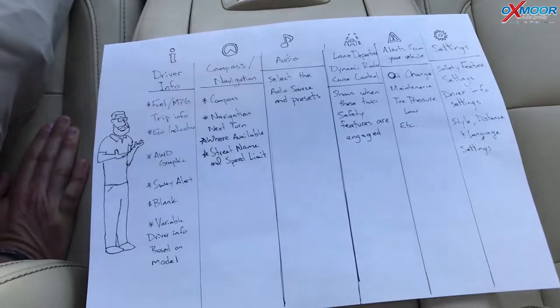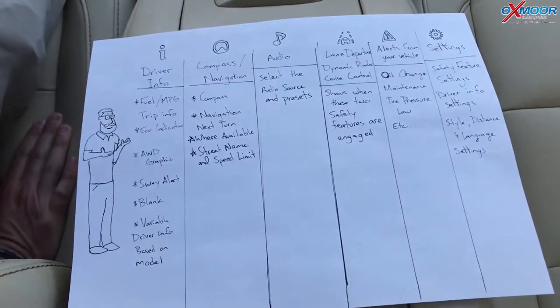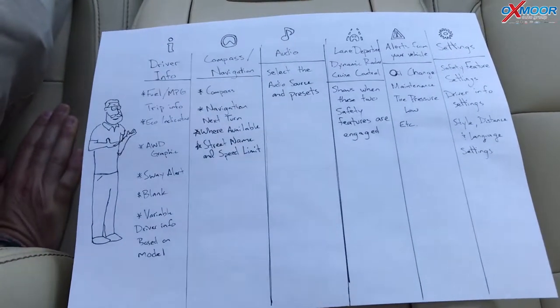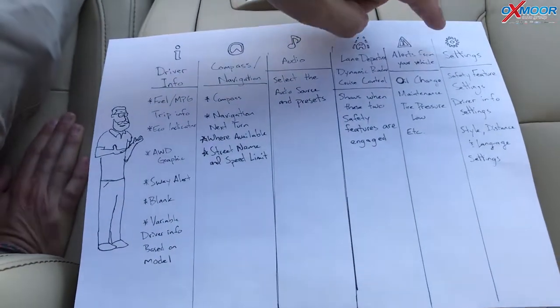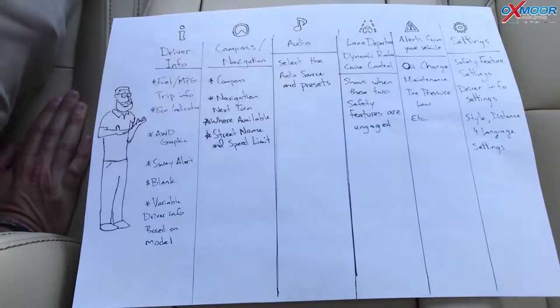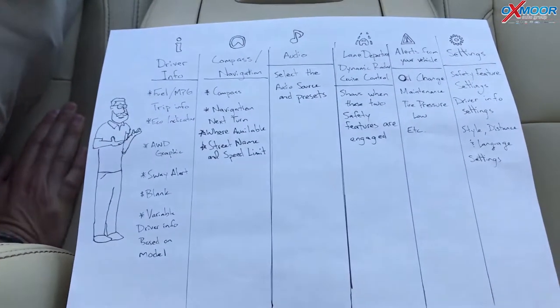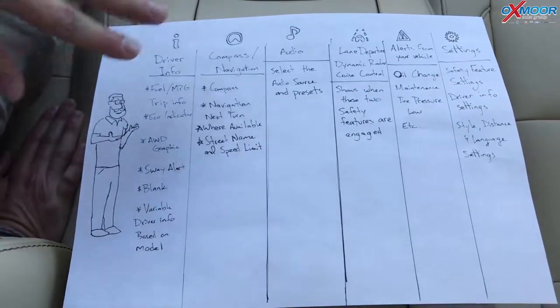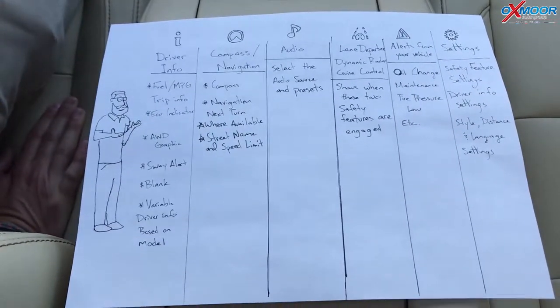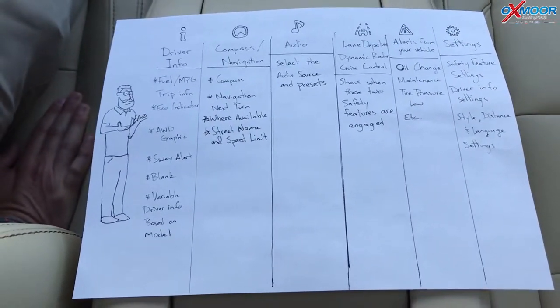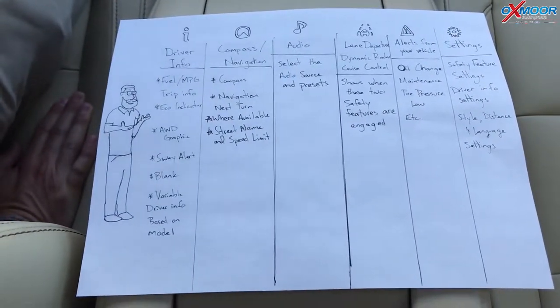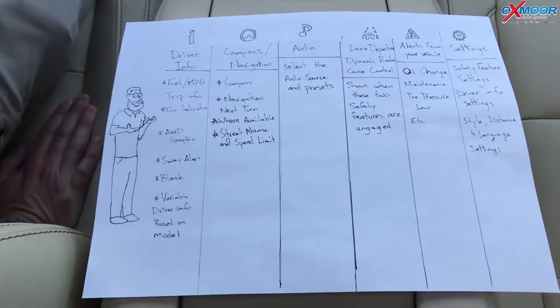Low fuel, low oil, low tire pressure, maintenance needed, etc. And then all your settings are over here — you've got the universal gear icon. So this little map, if you wanted to take a screenshot of this, helps you navigate through this.